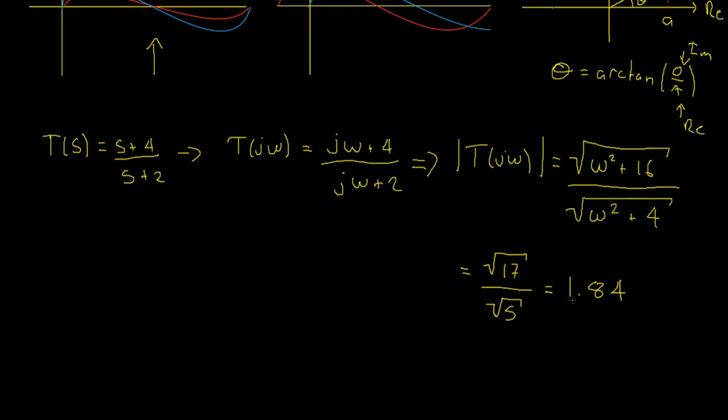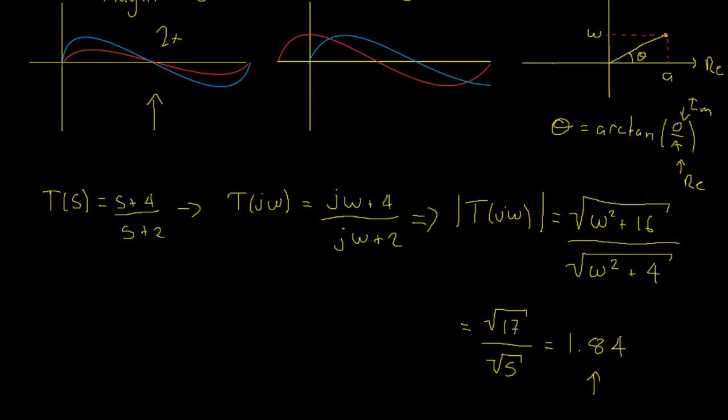So, if our input wave of one radian per second had a magnitude of one, the output wave would also be one radian per second. However, it would have a magnitude of 1.84 times the input signal.